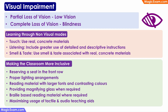Next, let us look at some of the important types of disabilities or impairments from a syllabus point of view and see how we can support such students in our classroom. Talking about visual impairment, we are referring to partial loss of vision — that is, low vision — or complete loss of vision, that is, blindness.